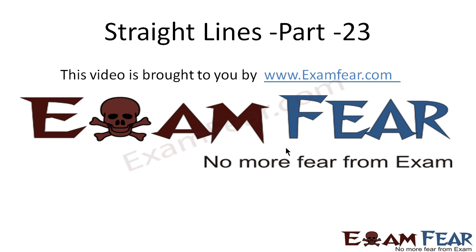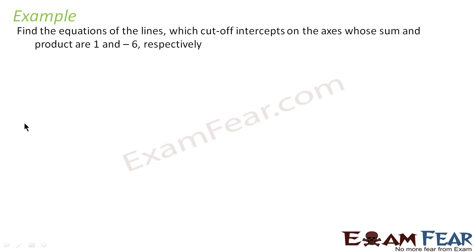Hello friends, this video, Straight Line Part 23, is brought to you by examfier.com. We have to find the equation of the line which cuts all the intercepts on the axis whose sum and product are A and B.